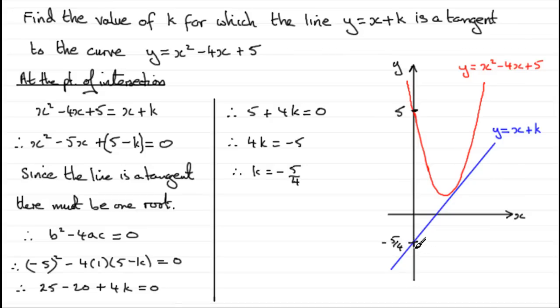So hopefully that gives you an idea of how we can use the discriminant in our quadratic equation to determine the nature of the roots, or use that fact to know that when it's a tangent, we're just going to get one root.